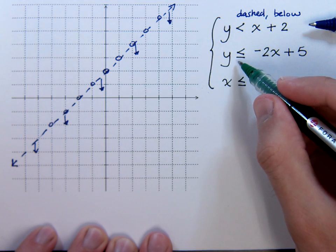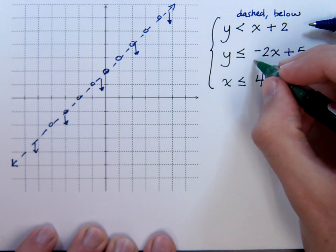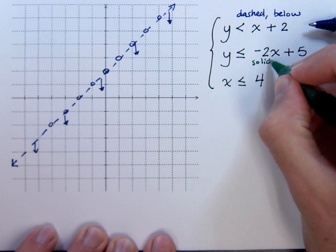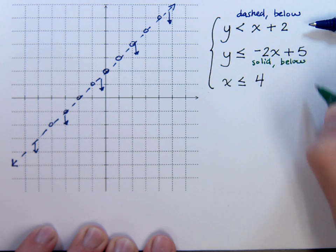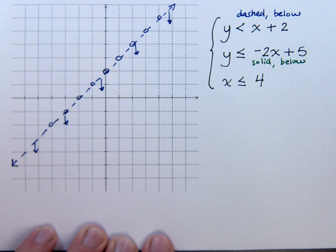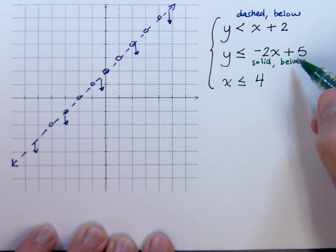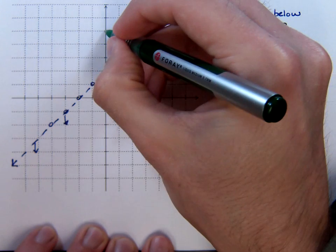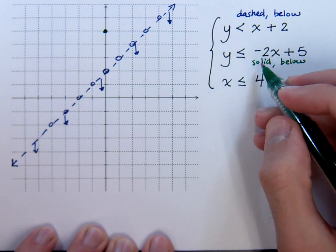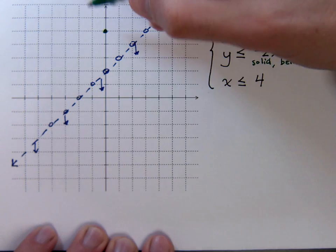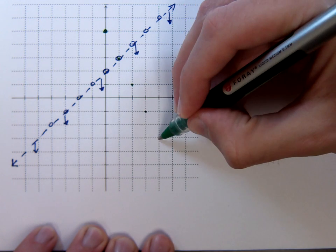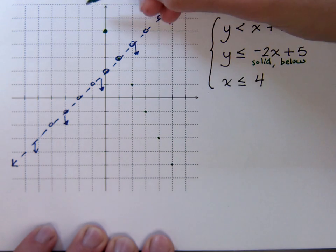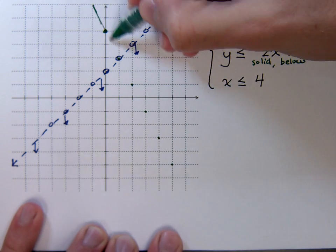Now what about this next one right here? This one is going to be a solid line shading below as well. It's going to start at 0, 5, and has a slope of negative 2.